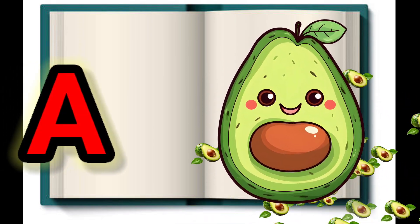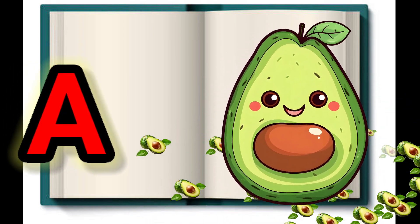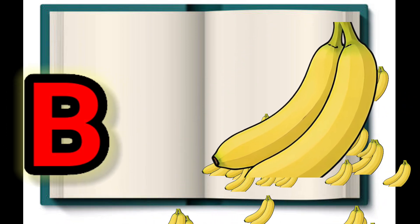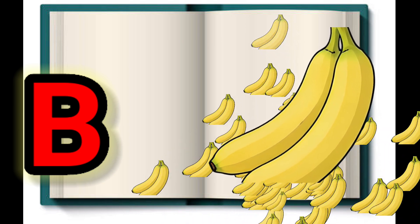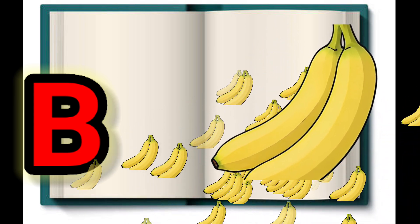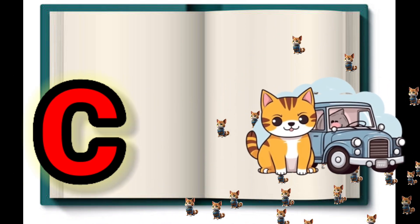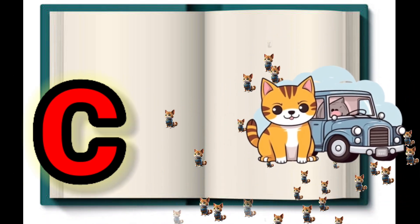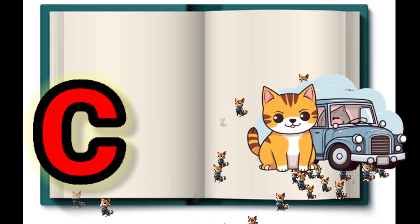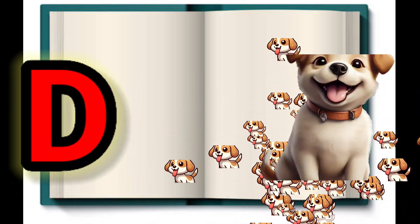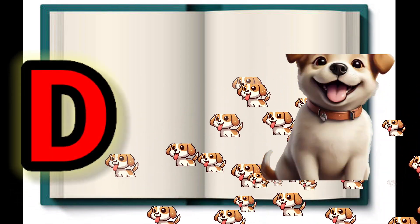AA for Avocado, BB for Banana, CC for Cat, DD for Dog.